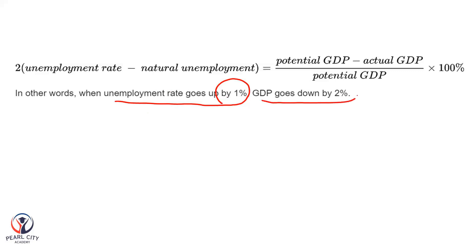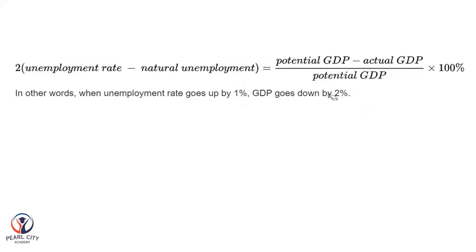GDP will go down by 2%. The formula is: 2 times (unemployment rate minus natural unemployment) equals (potential GDP minus actual GDP) divided by potential GDP, multiplied by 100%. A 1% change will be expressed the same way.